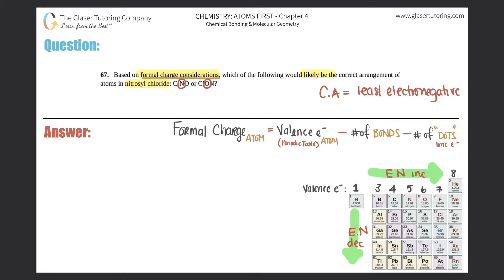So it's down to N versus O. Well, which one is the less electronegative? Nitrogen is. So that means that this would be the compound. This would be the correct compound. And this would be incorrect.